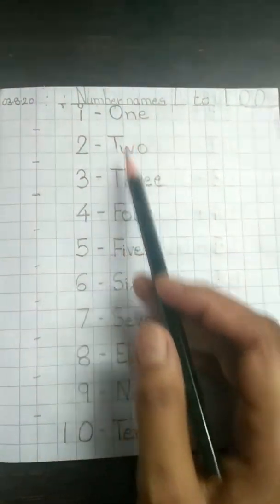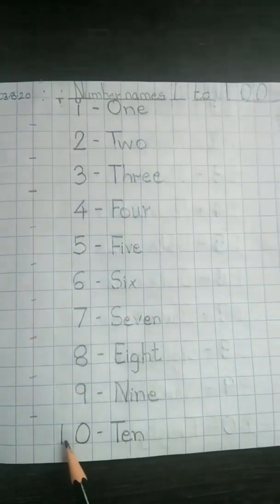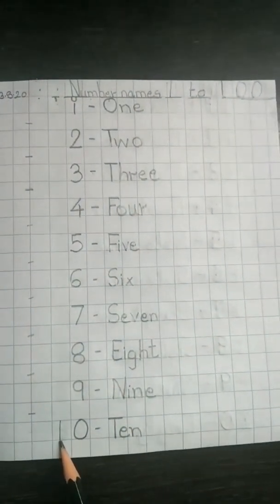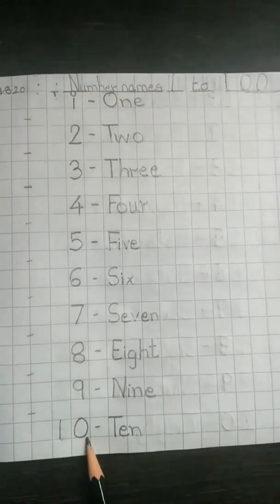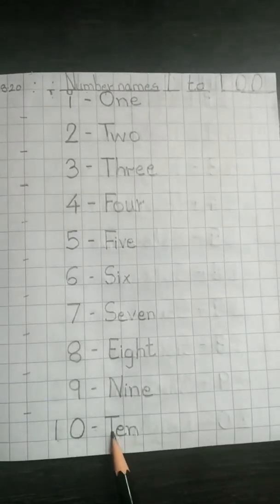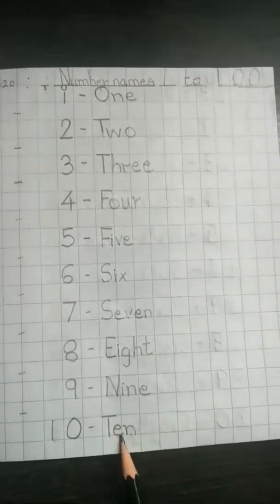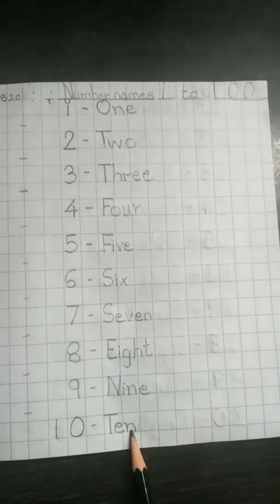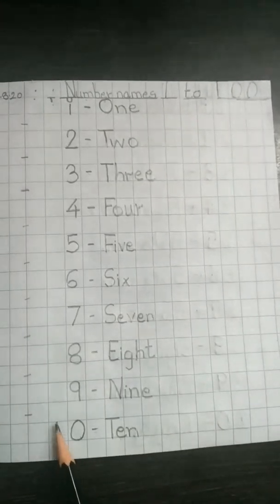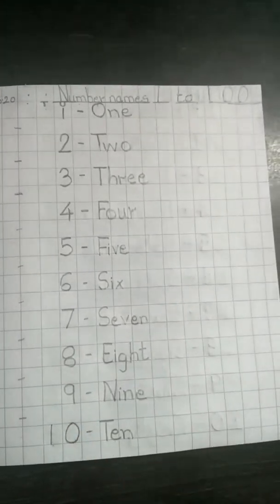See children, now we have finished writing till number 10. 1, 10 and 0 units is number 10. Dash. T, capital T, E, N. 10. Children, I repeat, here you have to write the numbers in the full box.